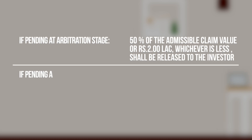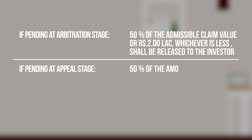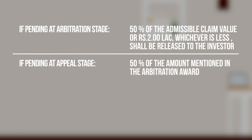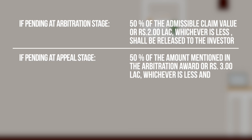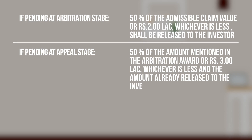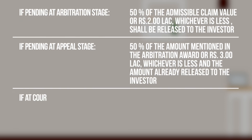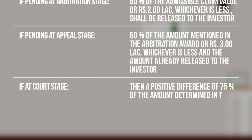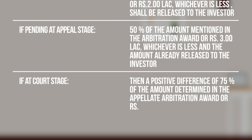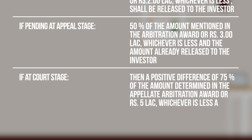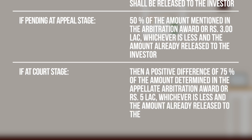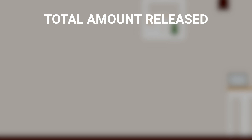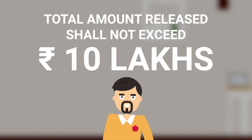If pending at appeal stage, 50% of the amount mentioned in the arbitration award or 3 lakh rupees, whichever is less, minus the amount already released to the investor. If at court stage, a positive difference of 75% of the amount in the appellate arbitration award or 5 lakh rupees, whichever is less, minus the amount already released. Total interim relief from IPF shall not exceed 10 lakh rupees in a financial year.